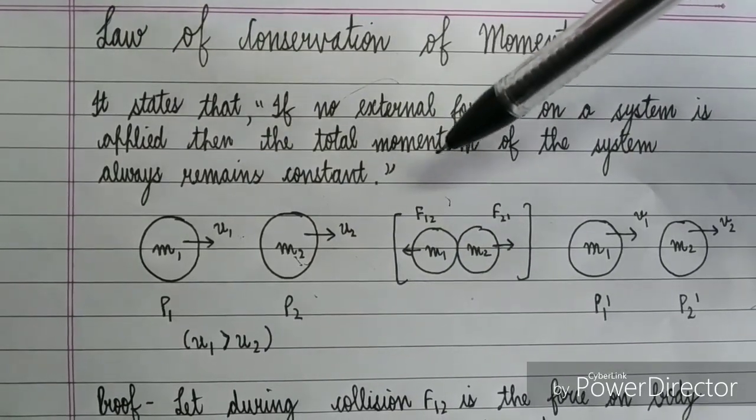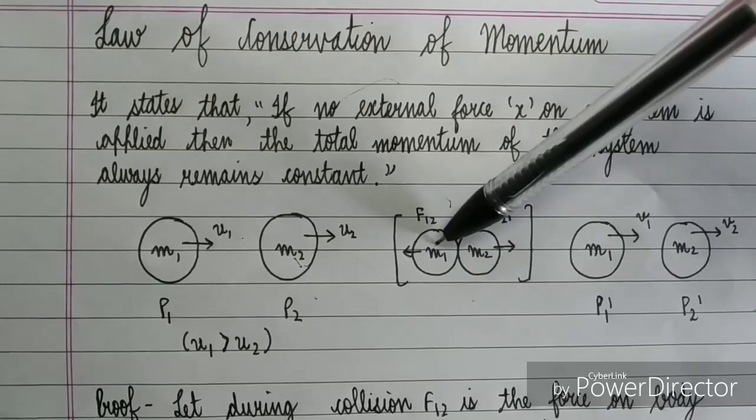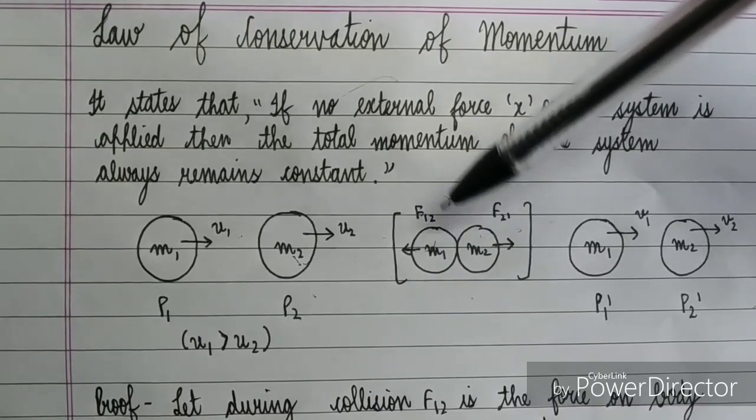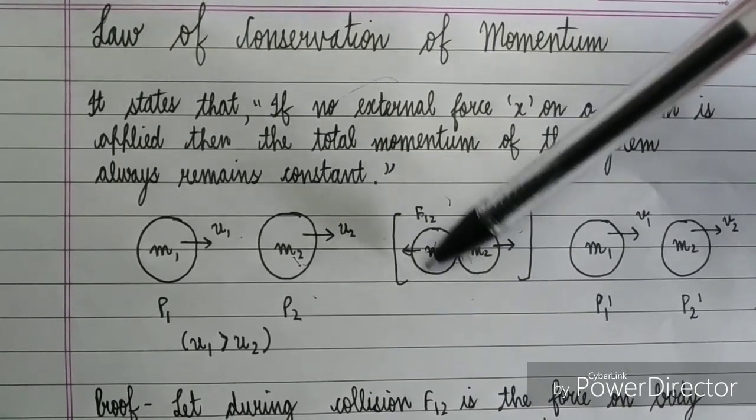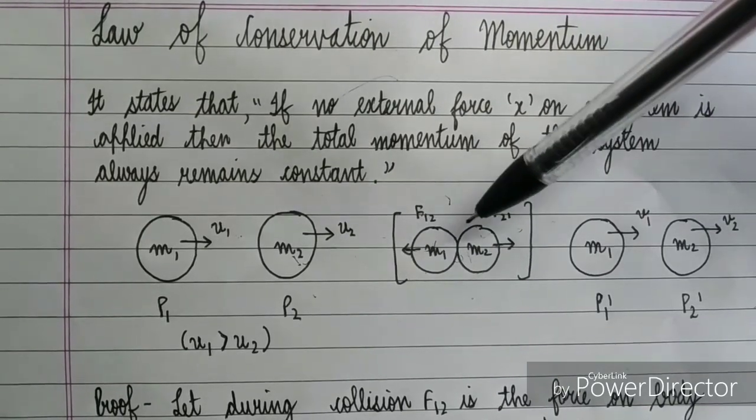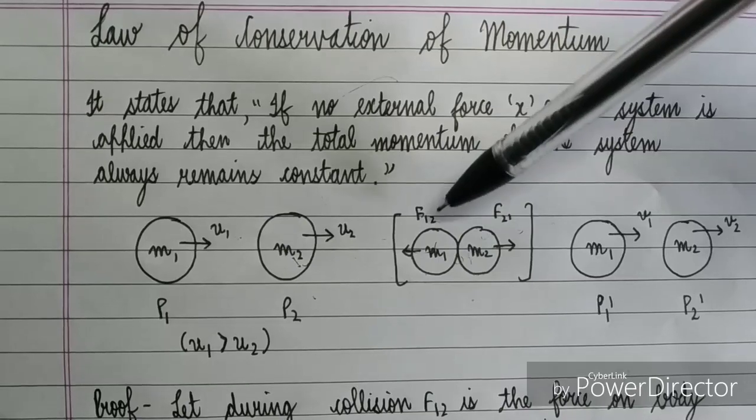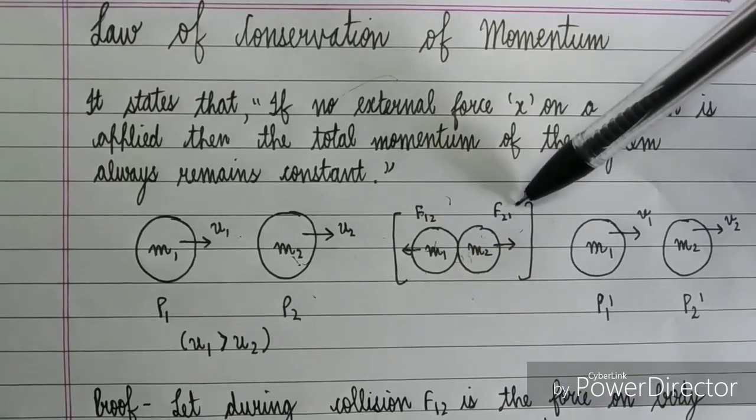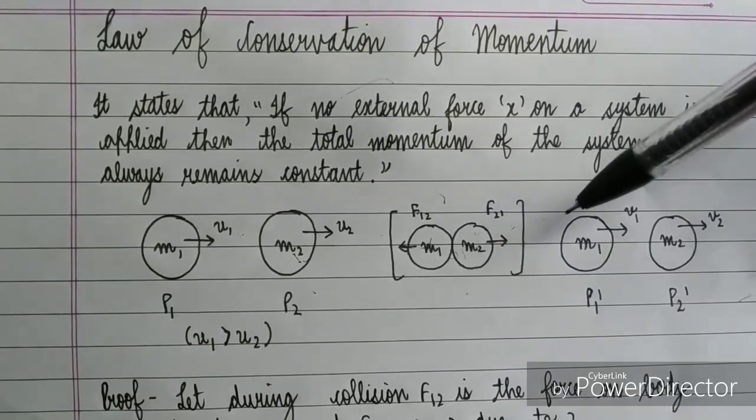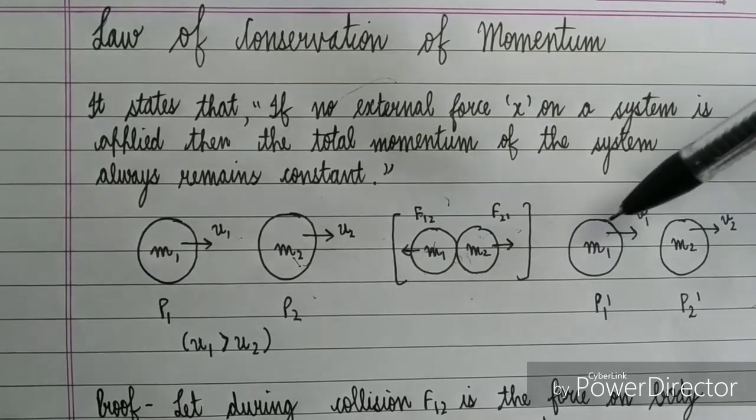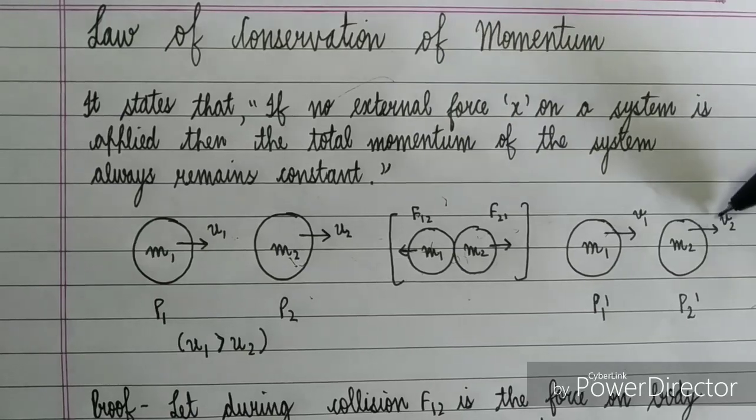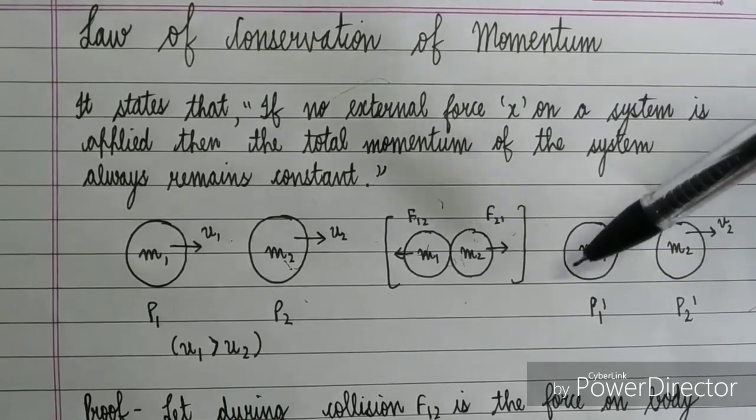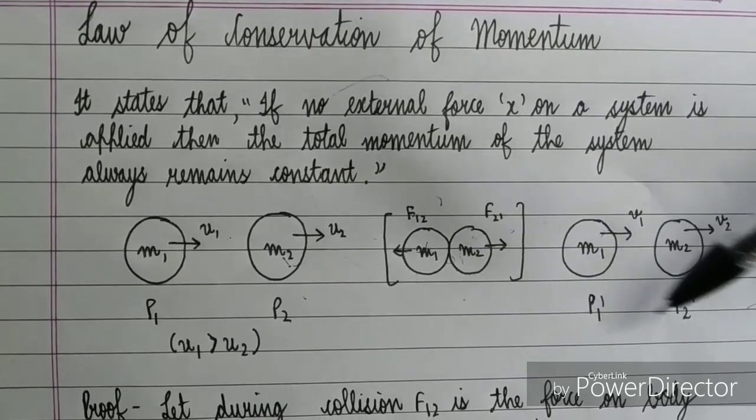And this figure represents when two bodies have collision. So this body will move on to this side and this body will move on to this side. And F12 is the force exerted by M1 on M2. After collision, this figure represents after collision. This body will move on to this side and this body also on to this side. So the final velocity will be V1 and V2, and their momentum will be P1 dash P2 dash.